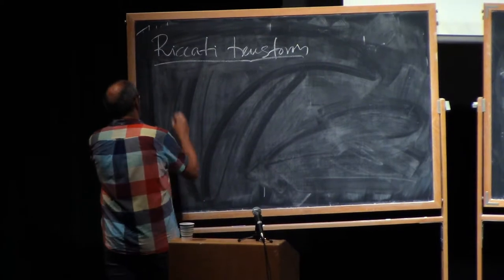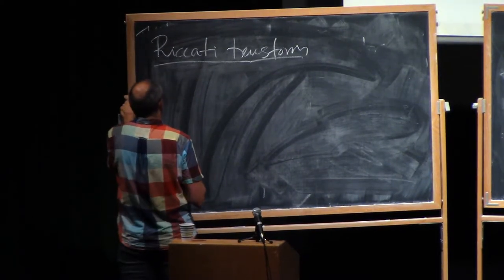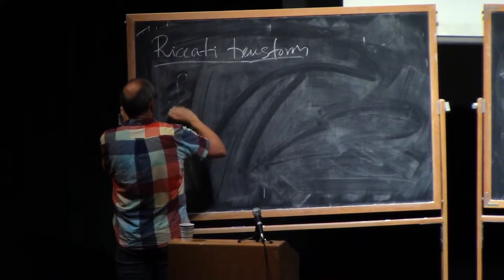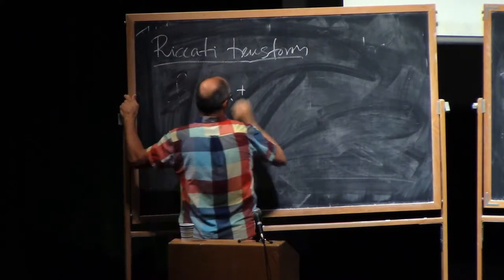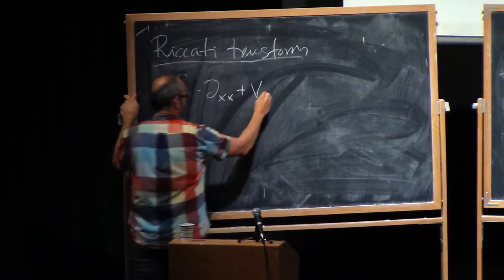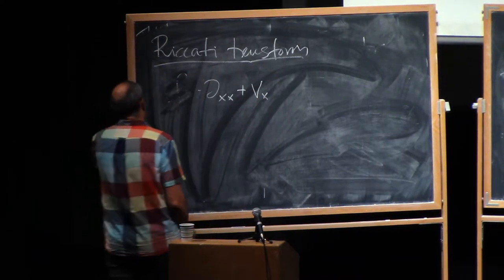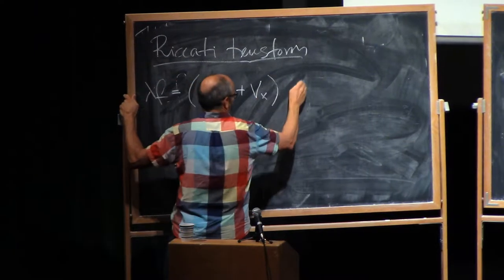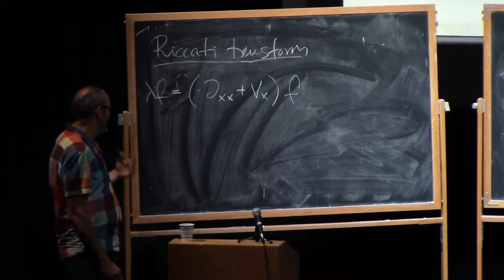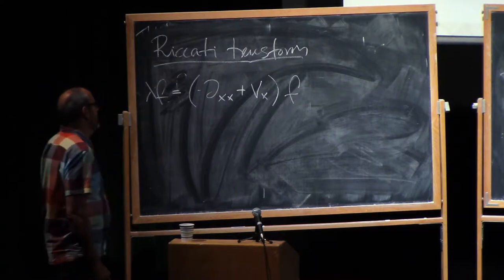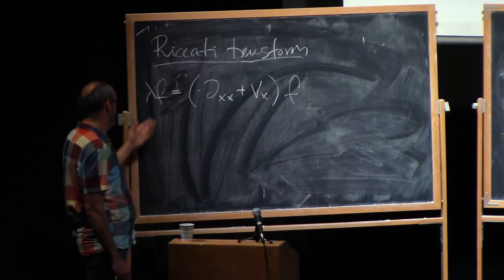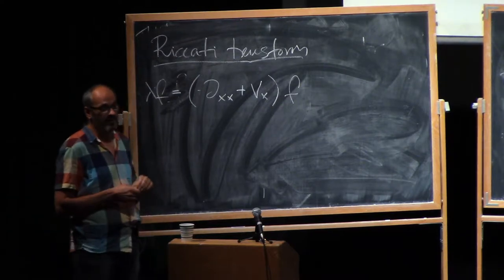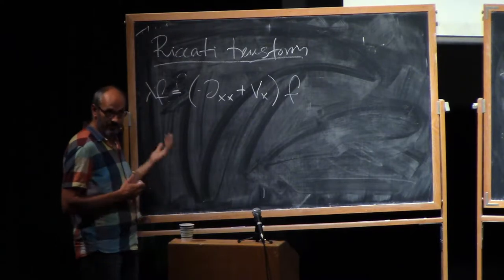But if you have, right, so if you have this differential equation, right, that F. So what is the eigenvalue equation? So you have something like an operator, which is minus del_xx plus some potential V(x). This is your Schrödinger operator. The eigenvalue equation for this is lambda F equals minus del_xx V(x) times F. So this is a second-order linear differential equation, and this is a way to try to understand the roots.